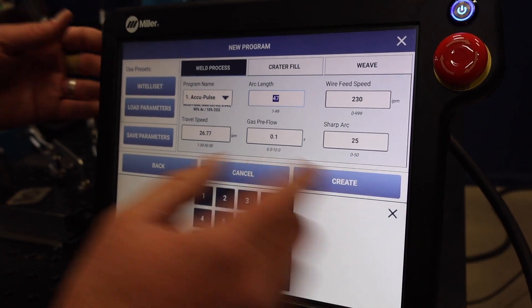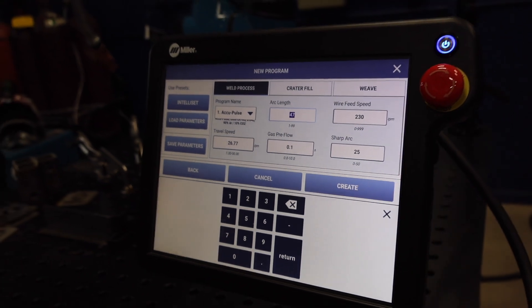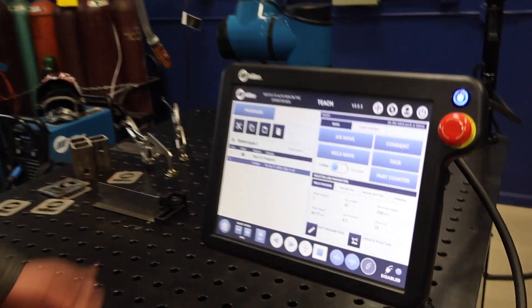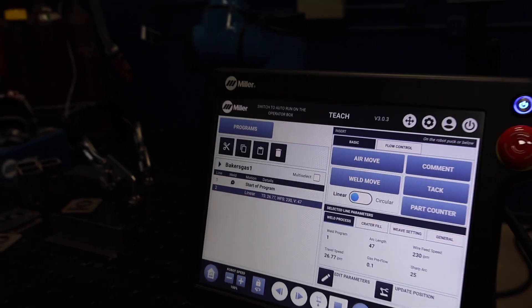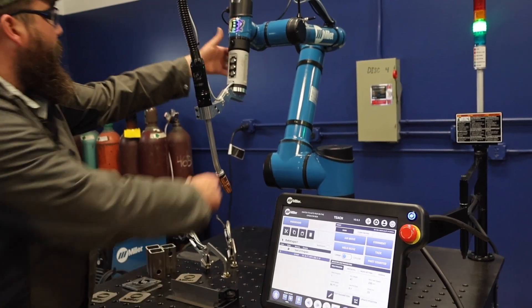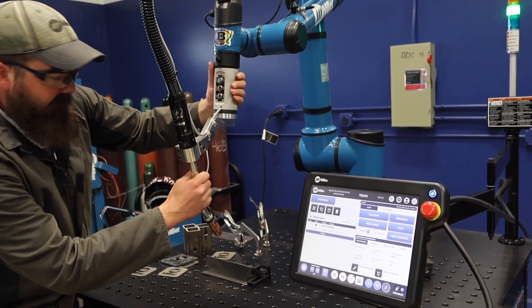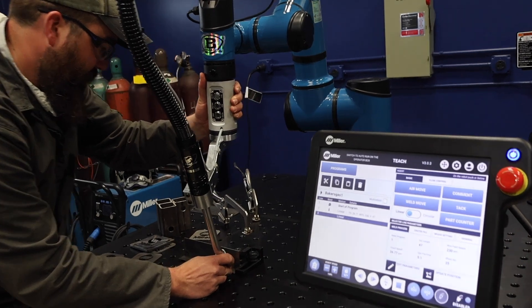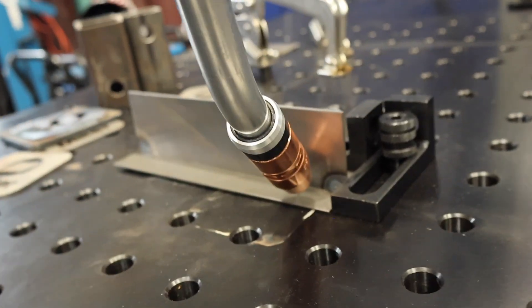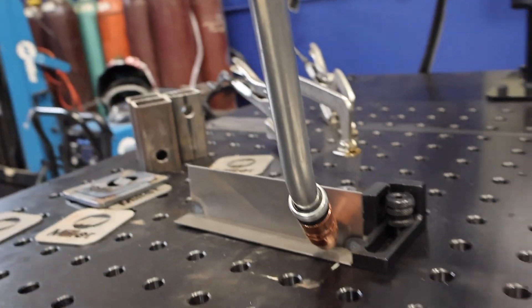We're running AccuPulse today. AccuPulse controls voltage and amperage on thin-gauge material. Great pulse setting for this particular one. Now we have our program set up. I'll come out, we'll move down and use our puck to adjust. We'll put an air point right there, then come down to our joint. Then we'll use the puck to adjust. When you get real close in there, it gives you your finite movement.